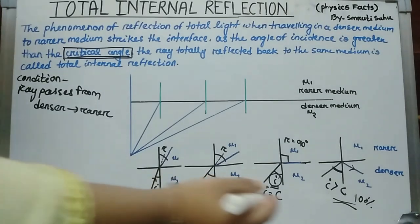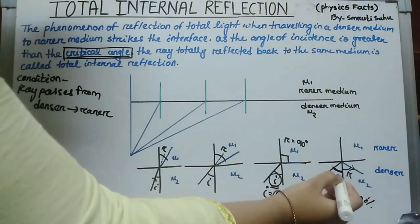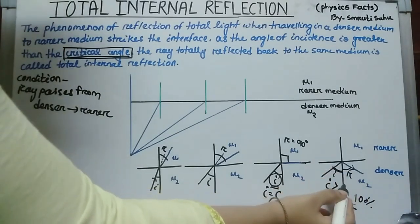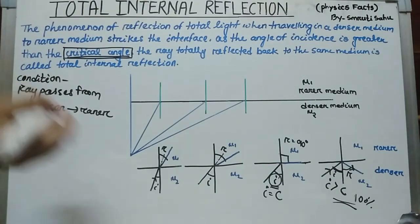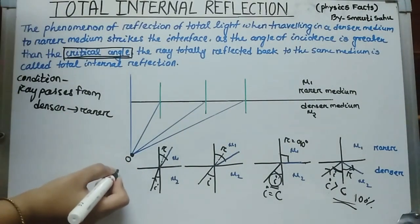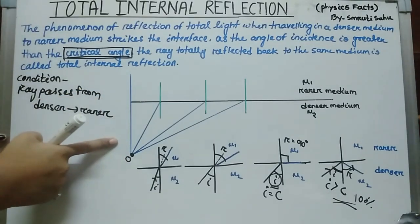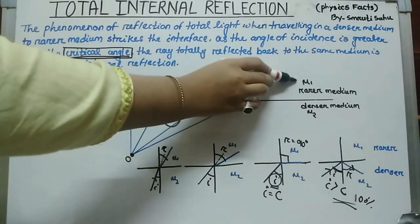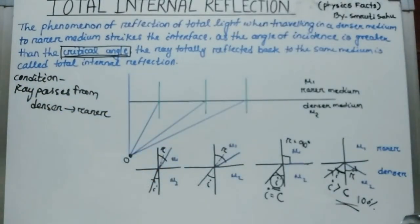Here also the angle of reflection equals the angle of incidence — it obeys the laws of reflection. Now, consider an object placed at a certain distance from the interface in the denser medium, where the rarer medium has refractive index mu1 and the denser medium has refractive index mu2.